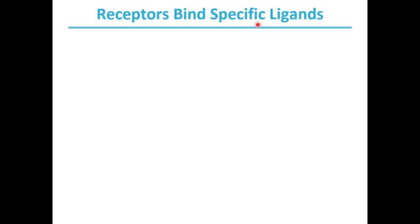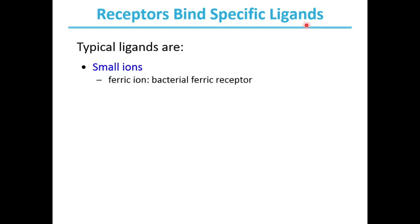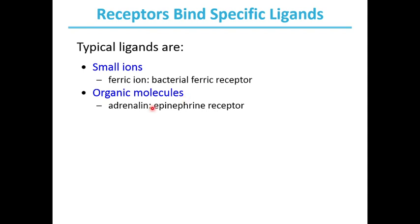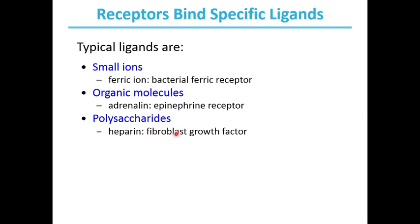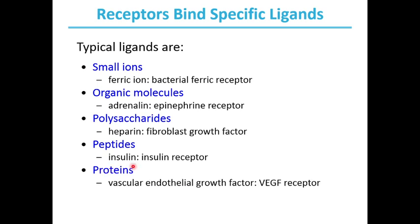Receptors bind specific ligands. Typical ligands include small ions — such as ferric ion in bacterial ferric receptors — organic molecules such as adrenaline, which binds G protein coupled epinephrine receptors. Polysaccharides such as heparin bind fibroblast growth factor receptors. Peptides such as insulin are recognized by insulin receptors. Proteins such as vascular endothelial growth factor (VEGF) are bound by VEGF receptors.